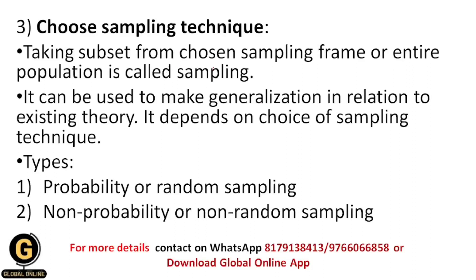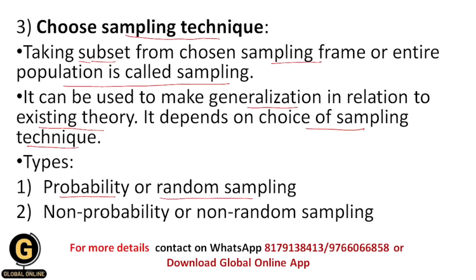The third step is to choose a sampling technique. Taking a subset from a chosen sampling frame or the entire population is called sampling. The sample is the part of the population which we take for research purposes. Sampling can be used to make generalizations in relation to existing theory, and it depends on the choice of sampling technique. There are two types of sampling techniques: first is probability or random sampling, and second is non-probability or non-random sampling.